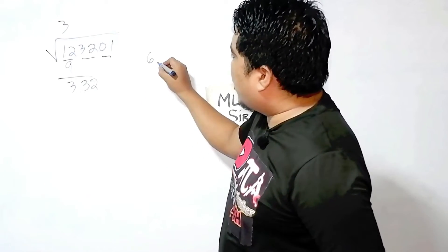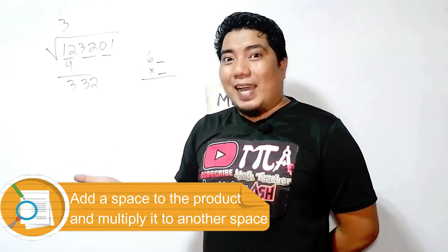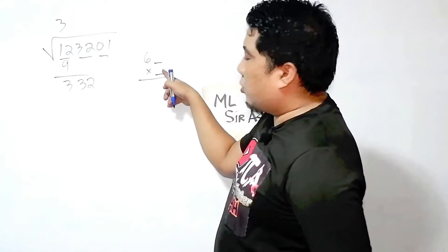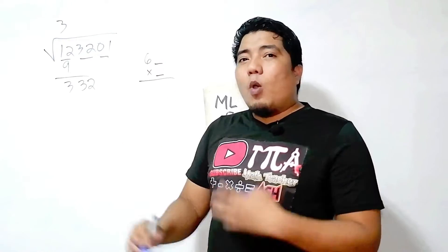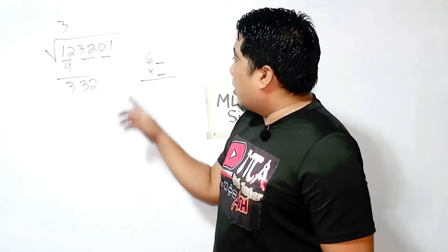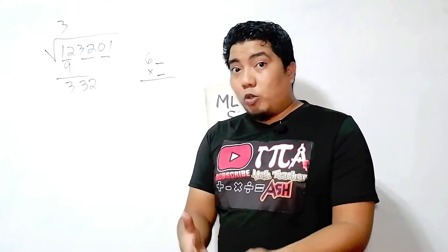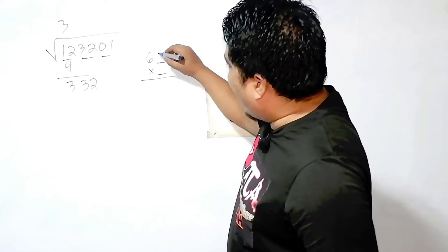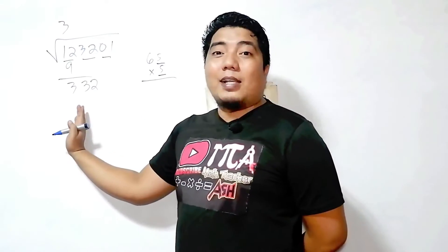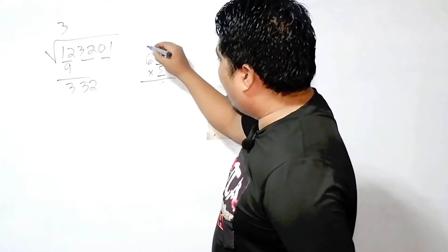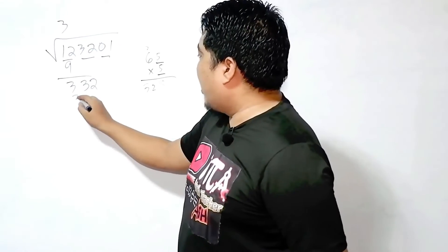What you will do is add a space, and then this two-digit number will be multiplied by that space being added. The technique here is: if you put 3 in the space, that will also be 3 in the multiplier; if you put 4, that will also be 4. So the question is: what number goes in the space? Consider the number 332. Since we have 6, if you divide 332 by 6, the first digit you get is 5. So you place 5 here. Then 65 times 5 — let's verify: 5 times 5 is 25, and 5 times 6 is 30 plus 2 is 32. So you have 325.